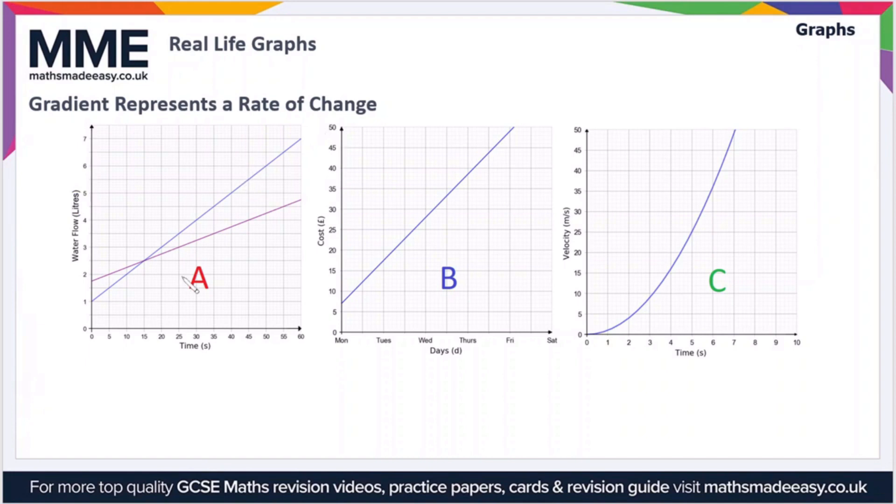So let's look at these graphs A, B, and C, starting with A. We can say that the gradient of A, which we find from taking the height by the width of any section of the graph, like that for instance,